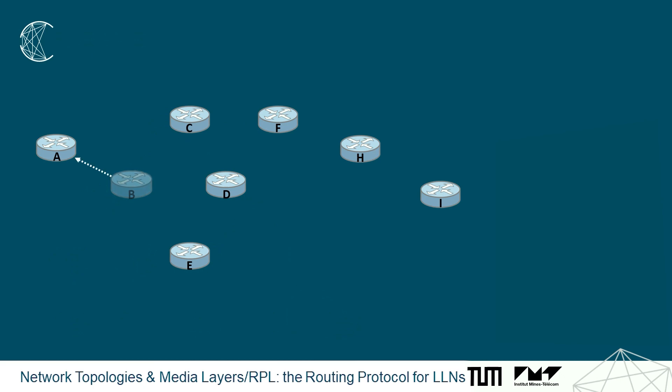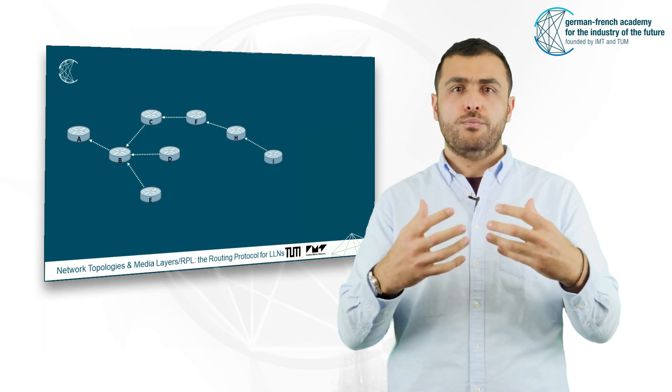As we can see, each node will select a neighbor as a preferred parent, which is going to be its next hop towards the root.